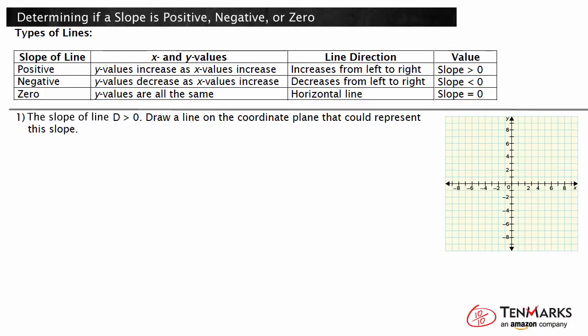The slope of line D is greater than zero. Draw a line on the coordinate plane that could represent this slope. Let's look at our chart to determine what type of slope is greater than zero. Positive slopes are greater than zero, so we need to draw a line with a positive slope. Our chart tells us that the line increases from left to right. Draw any line on the coordinate plane that increases from left to right and shows a positive slope.